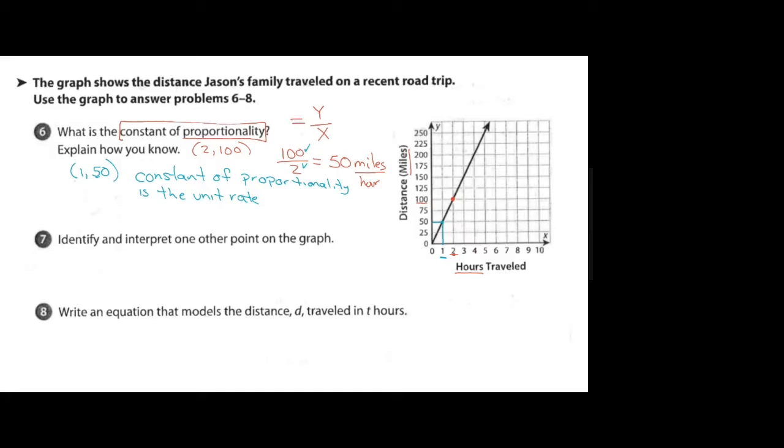It says to identify and interpret one other point on the graph. Well I've already given you two, but let's find a third one. Right here that's a point that crosses at a nice even thing. It goes over to 150 for the y and it's three, so three comma 150.